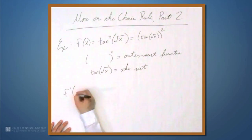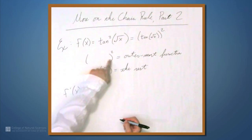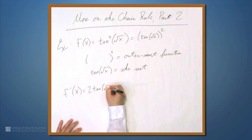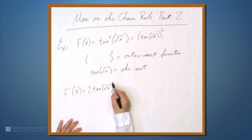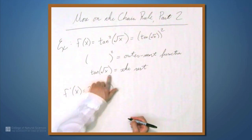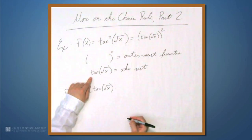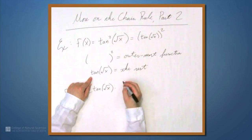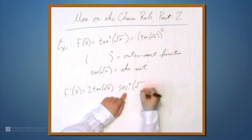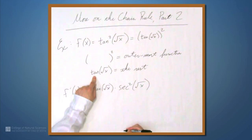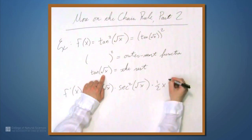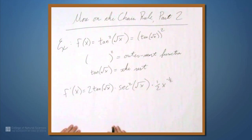We have f' equals the derivative of something squared, which is 2 times that thing — tangent of square root of x to the first power — times the derivative of what's inside, the derivative of the rest. Here, the outermost function is tangent, and the derivative of tangent is secant squared. So we're going to have secant squared of whatever's inside tangent, which is the square root of x, and then we multiply by the derivative of square root of x, which is one half times x to the negative one half.